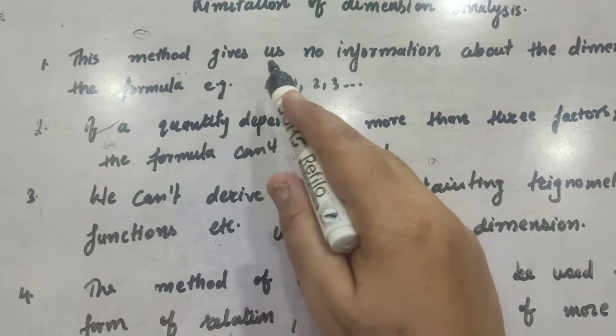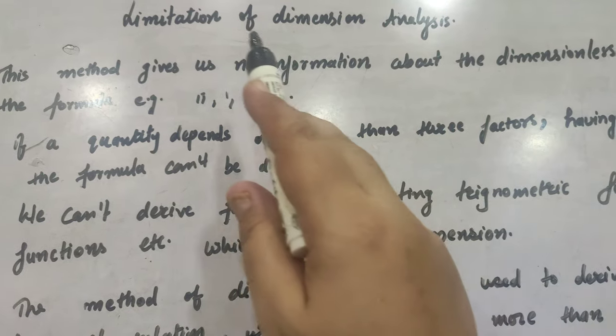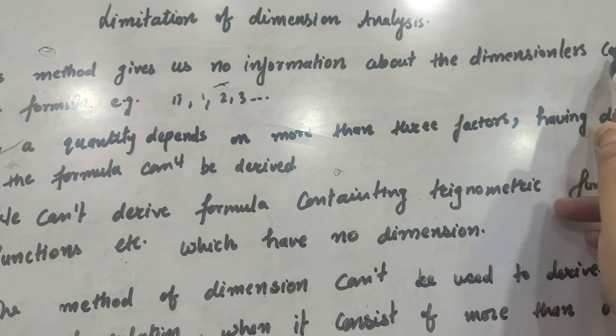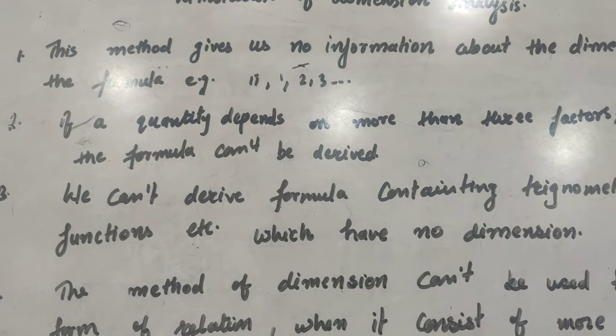This method, the first one is, this method gives us no information about the dimensionless constants. For example, π, 1, 2, 3, and so on.